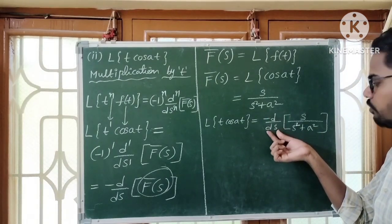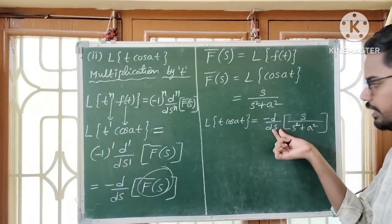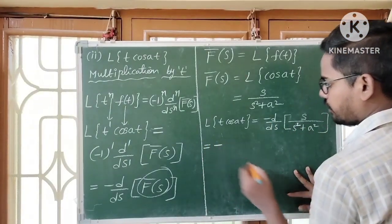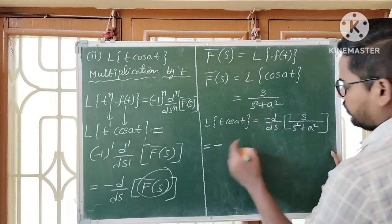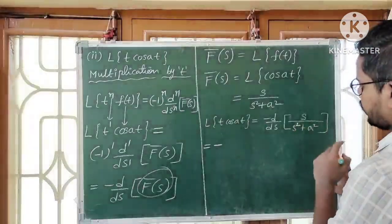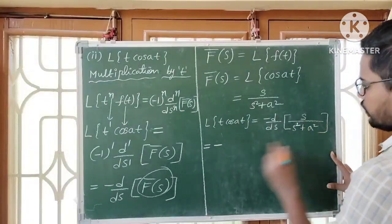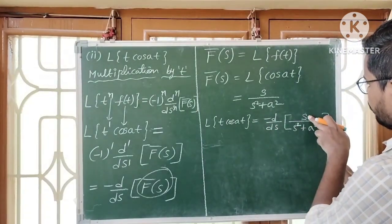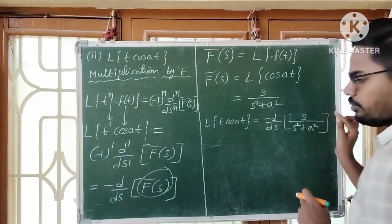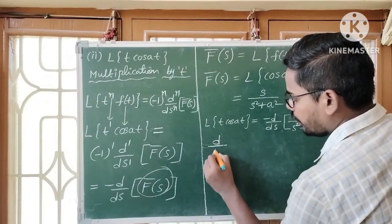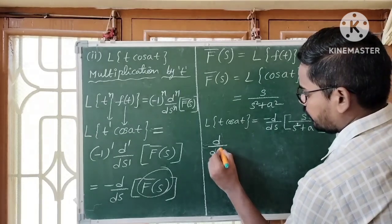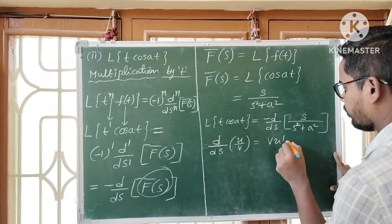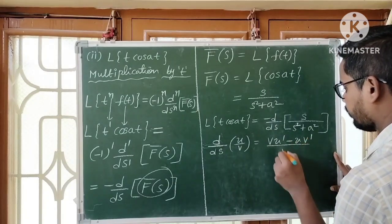d/dS means the derivative of this function with respect to S. Since it is in the form U/V, we apply the quotient rule: d/dS of (U/V) = (V·U' − U·V') / V². Here U = S and V = S²+A².